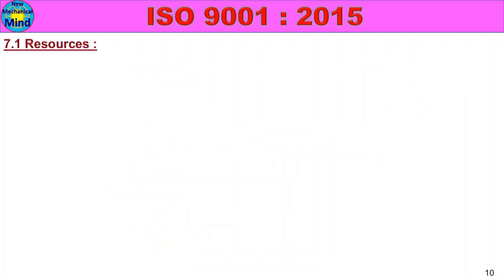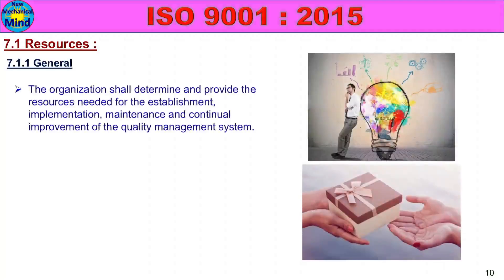7.1 Resources — 7.1.1 General: The organization shall determine and provide the resources needed for the establishment, implementation, maintenance, and continual improvement of the Quality Management System.